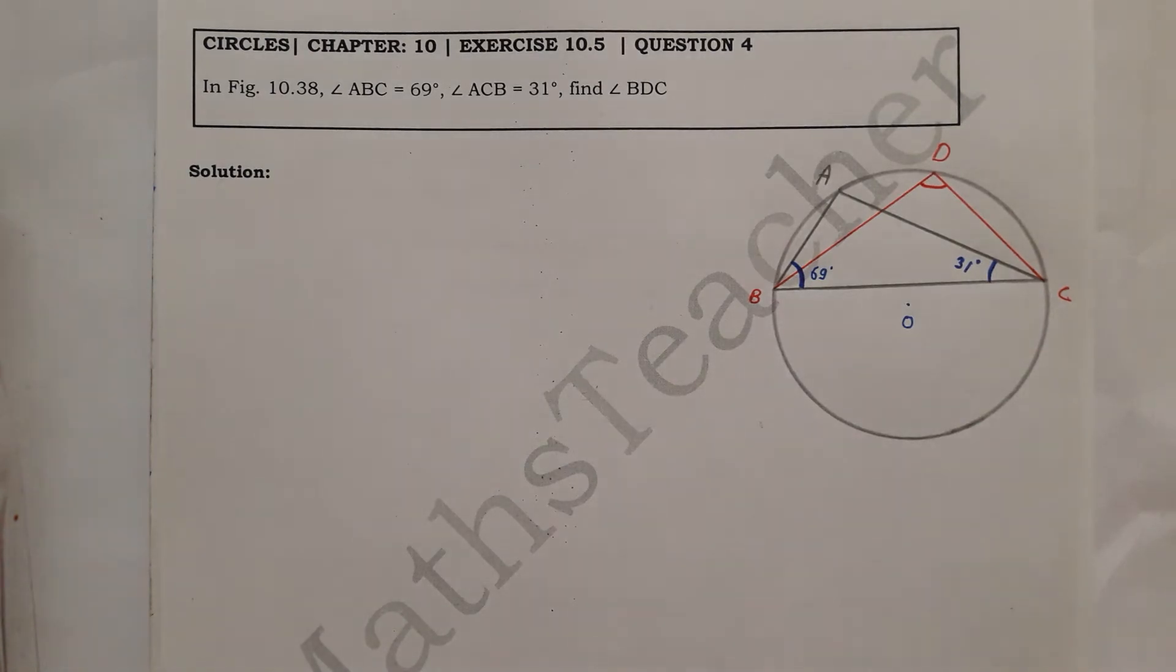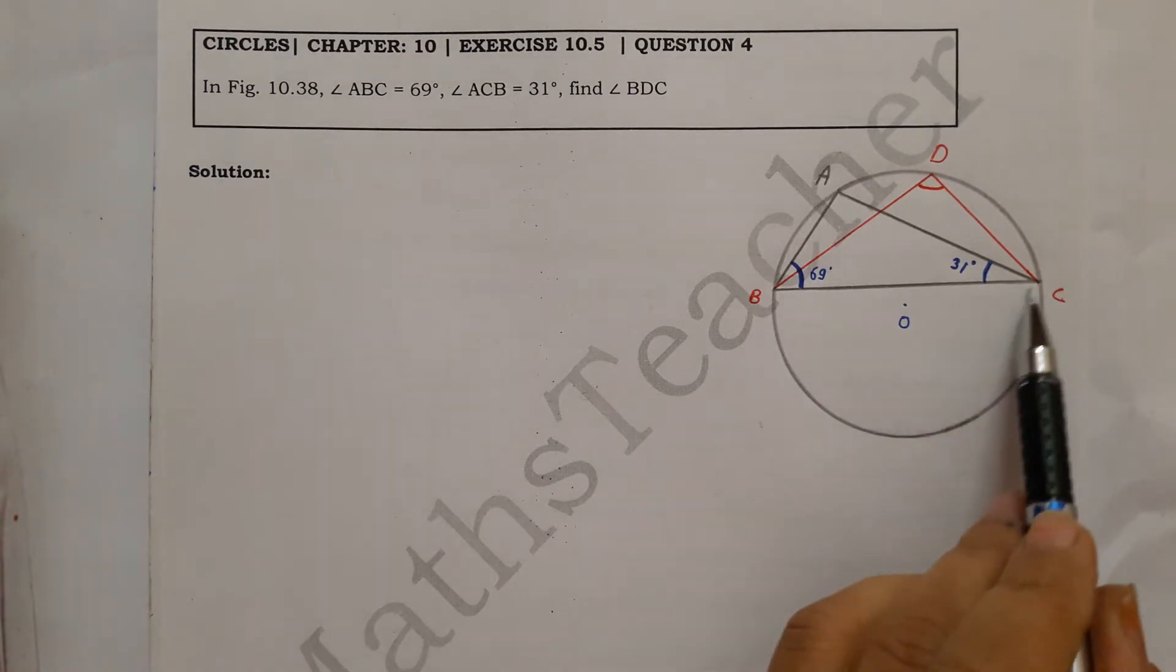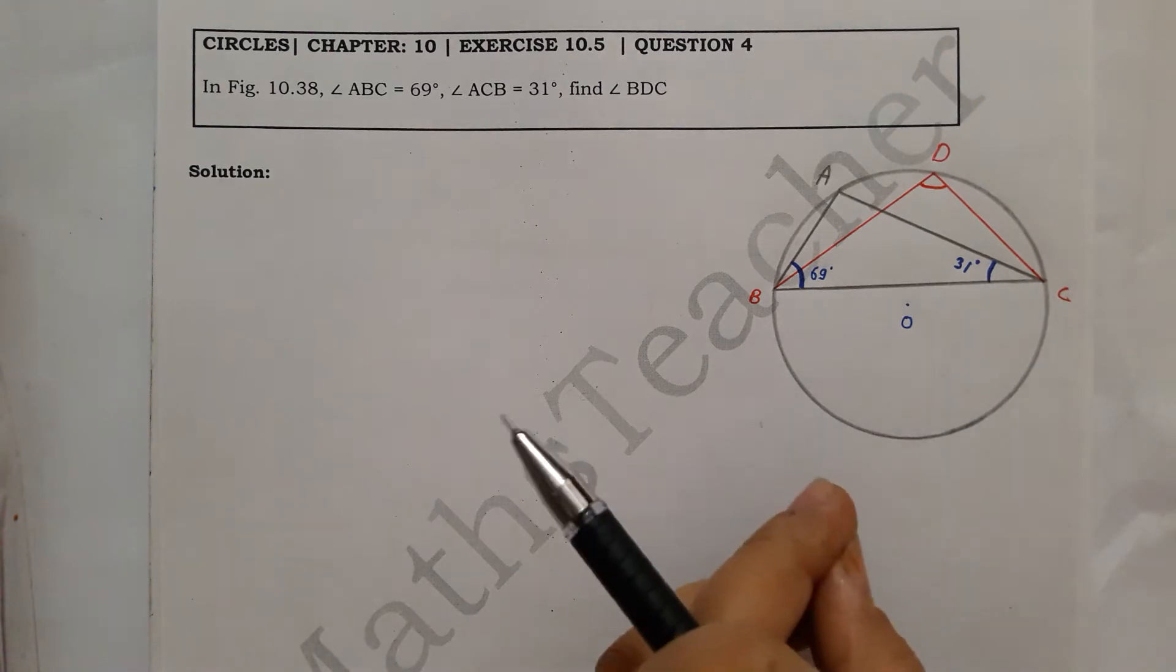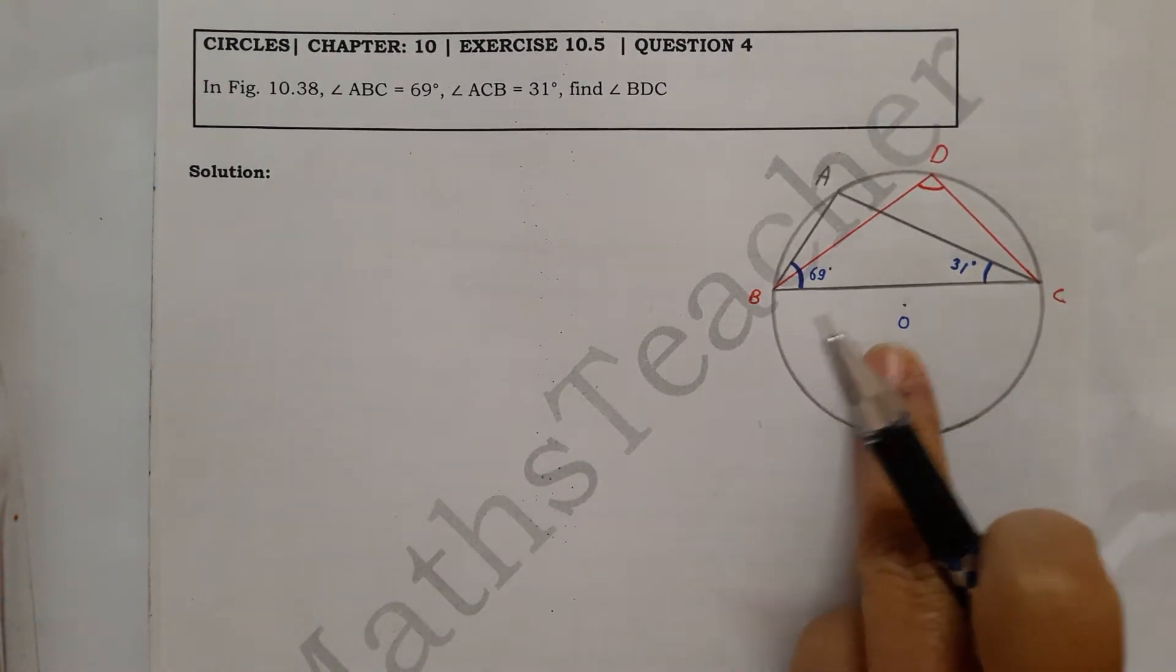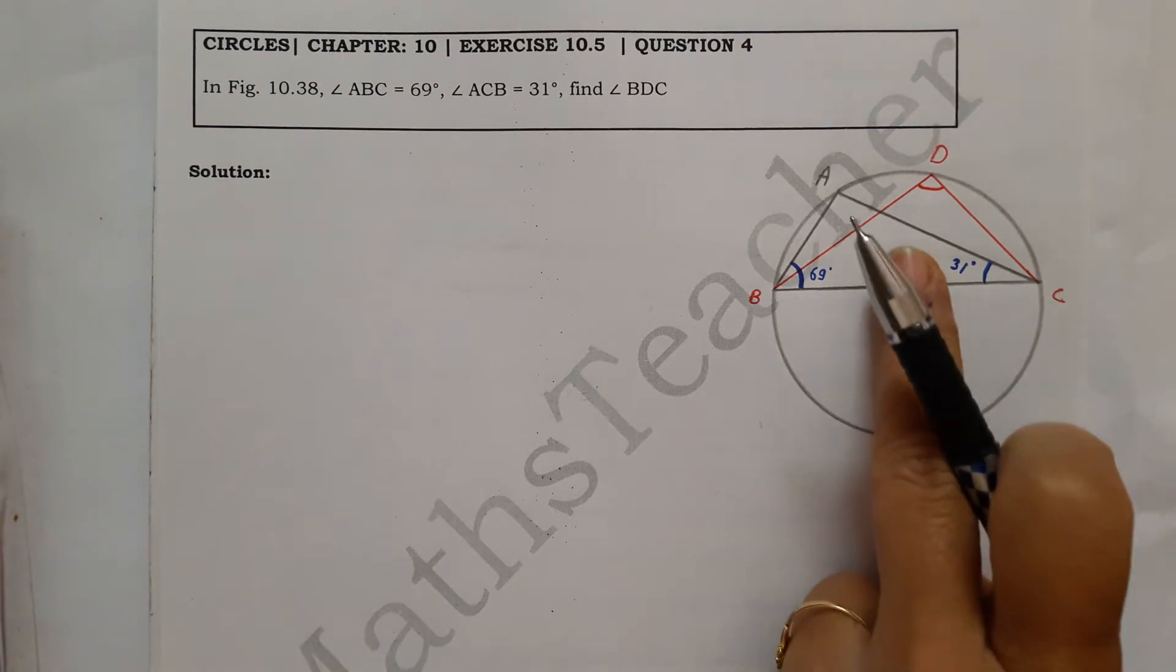Like you draw a chord in a circle - I have drawn BC chord here. So now it has divided the circle into two parts. This is your major segment, the big area, because the center of the circle is here. And this is the minor segment, the small part.